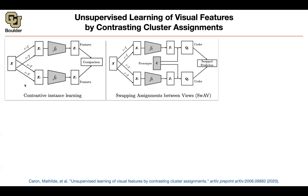This is contrastive learning. You have an image, you transform it into two different versions, push them through your neural network, get your features, compare them, make similar images similar, make different images different. That's contrastive learning. The other one is swapping assignment between views, which is going to help us turn deep cluster into an online algorithm rather than doing our clustering offline.